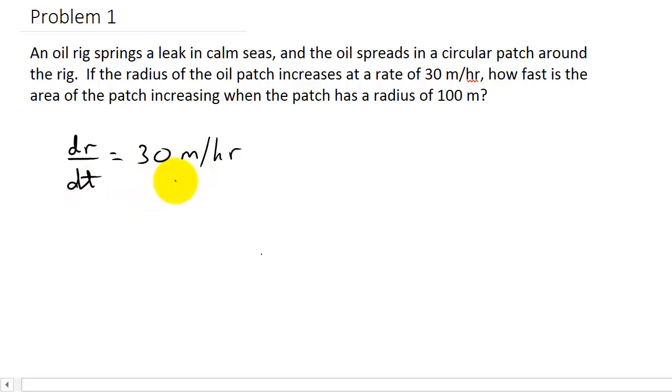And they want to know how fast the area of the patch is increasing when the patch has a radius of 100 meters. So they're telling us the radius is 100 meters and what they're wanting to know is how fast is the area of the patch increasing. So they want to know the change in the area, dA/dt. That's the change in the area with respect to time, that's what we're looking for.